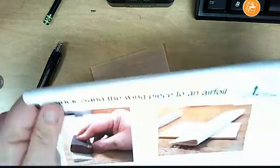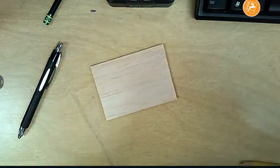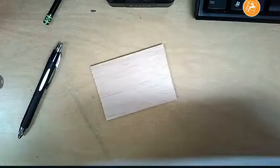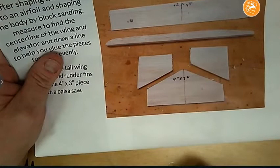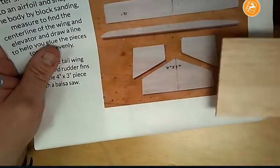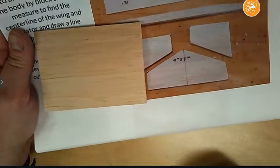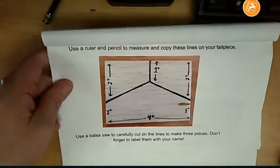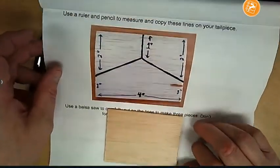We're not ready to quite block sand the wing yet because that's not dry, but what we need are these guys here. These pieces here come out of this rectangle, if you can believe that.